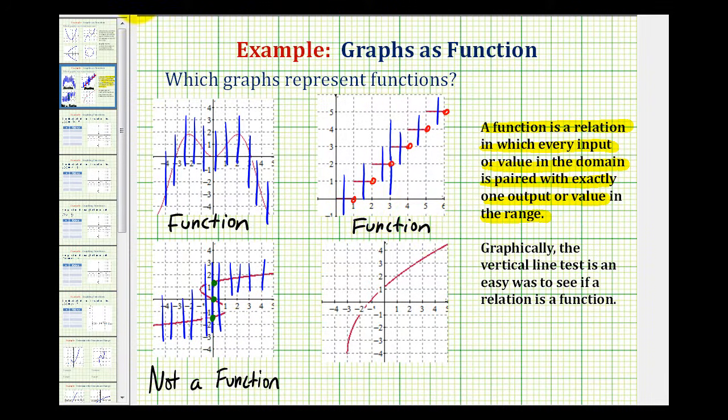Now I do want to mention if the graph looks something like this where both end points were closed, this would fail the vertical line test because if this was the graph and we sketched a vertical line here, it does intersect the graph at this point and this point.